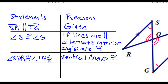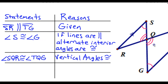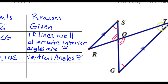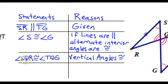Notice I had to use the three-letter name for angle Q. Don't just say angle Q equals angle Q because it's not the same angle. I chose this pair of angles because it was a little bit easier to write. But I could have instead said that angle R is congruent to angle T, using the same reason about parallel lines and alternate interior angles.